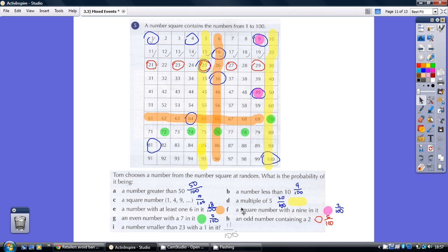A number with at least one six in it? Well, I've shaded those in that color. I think there are 18. A square number with a nine in it? Well, it's just the nine and the 49, so there's two of them.